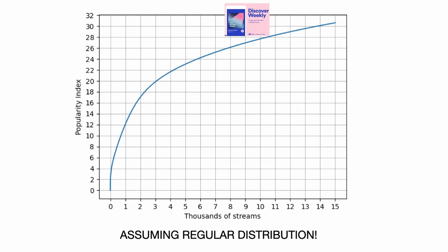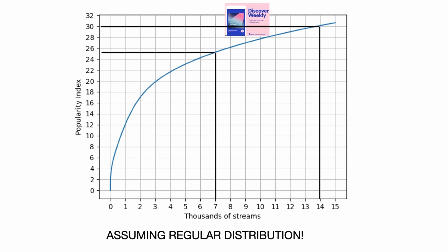The intuition is easy: for thousands of streams, the popularity index is low — actually less than 32%. For 8,000 streams it corresponds to roughly 26%, and from that point onwards you have very high chances to be on Discover Weekly because your popularity is high enough. This curve shows the concept of diminishing returns due to the sub-exponential nature of the function. With the first 7,000 streams you get to 25% popularity, but the next 7,000 streams give only 5 extra points.